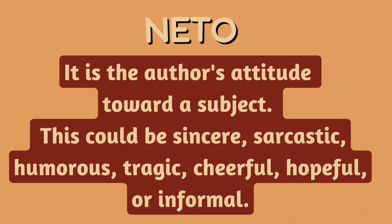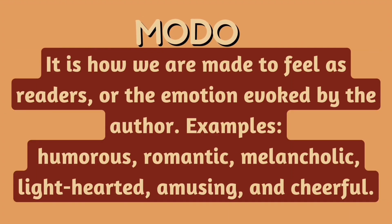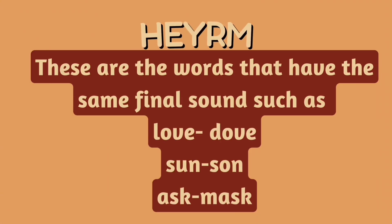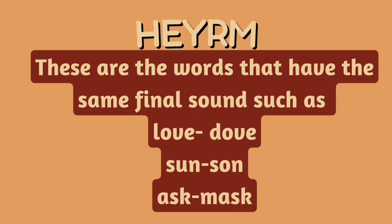Tone is the author's attitude toward a subject. A tone could be sincere, sarcastic, humorous, tragic, cheerful, hopeful, or informal. Mood is how we are made to feel as readers, or the emotion evoked by the author — examples: humorous, romantic, melancholic, light-hearted, amusing, and cheerful. Rhyme refers to words that have the same final sound — examples: love/dove, sun/sun, ask/mask.